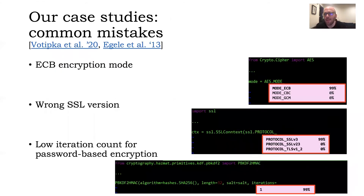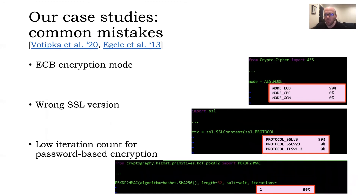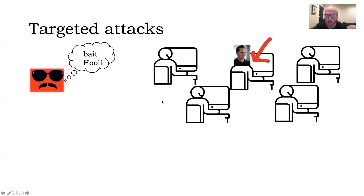The case study common mistakes we consider trying to bait the developer into making are: using ECB encryption, which is insecure; using a wrong or low SSL version; and using a low iteration count for password-based encryption, which makes code run faster — but that's bad because it makes password enumeration faster too. The developer might not notice any of these, because they are only a few characters apart from the secure code, and empirically, we know these are common mistakes developers make.